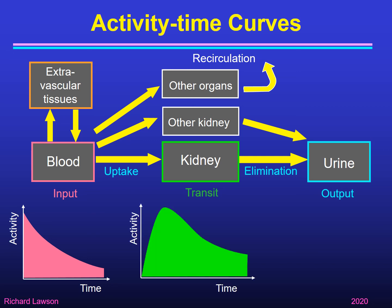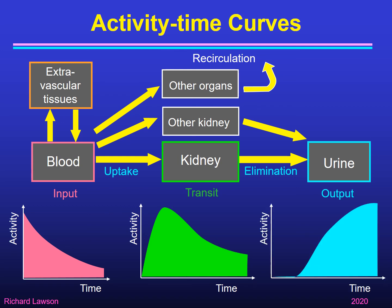The activity-time curve from the kidney will start from zero, rise up to a maximum, and as tracer transits through the kidney and comes out into the urine, that curve will begin to fall again. The activity-time curve from the urine shows a delay before it rises. So you can see why the curves are a complicated shape depending on all of these factors.